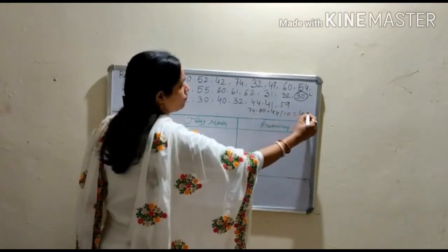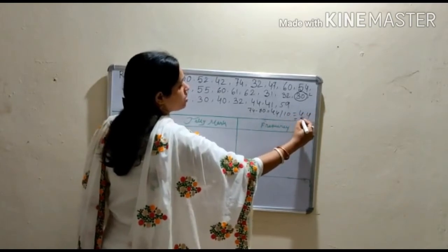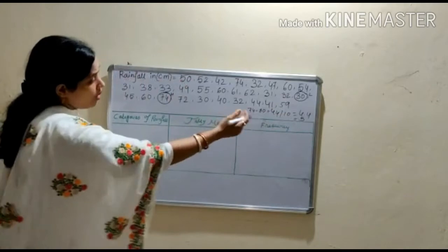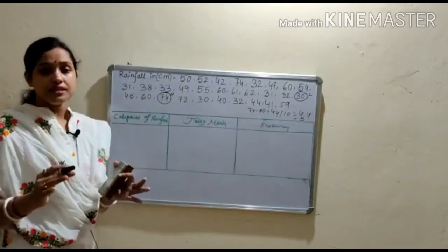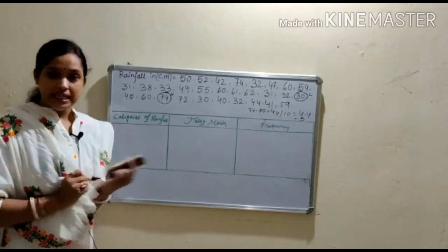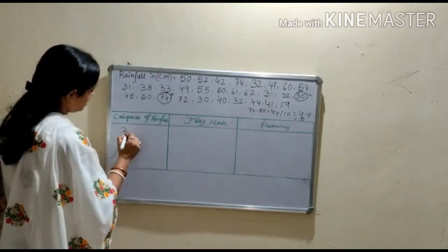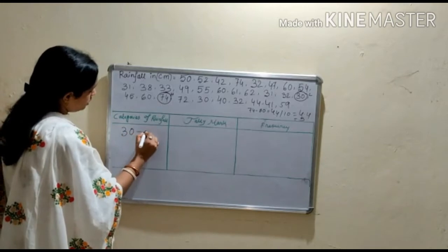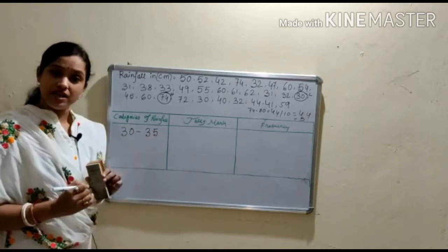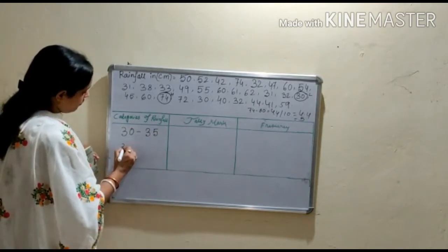We take it as a whole number 5, so our range is 5. So first in this section, our first category is 30 to 35, this is our first category. The next is 35 to 40. So in this way you have to make 10 categories in this section.